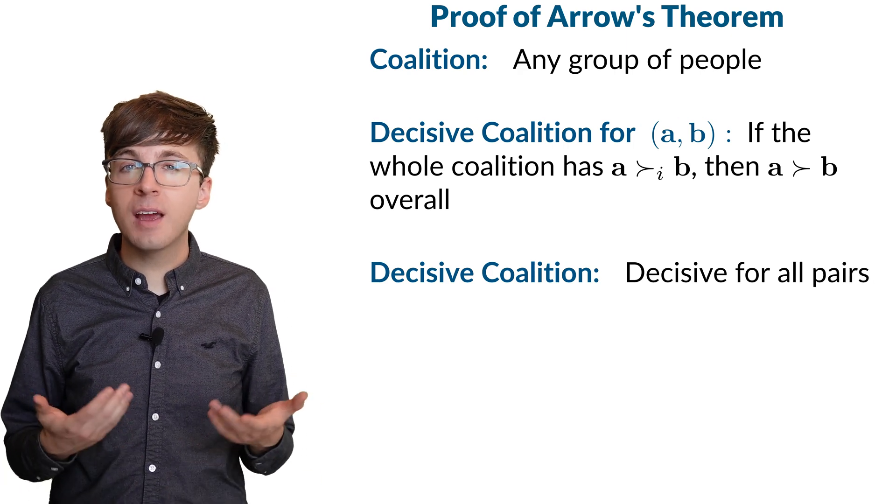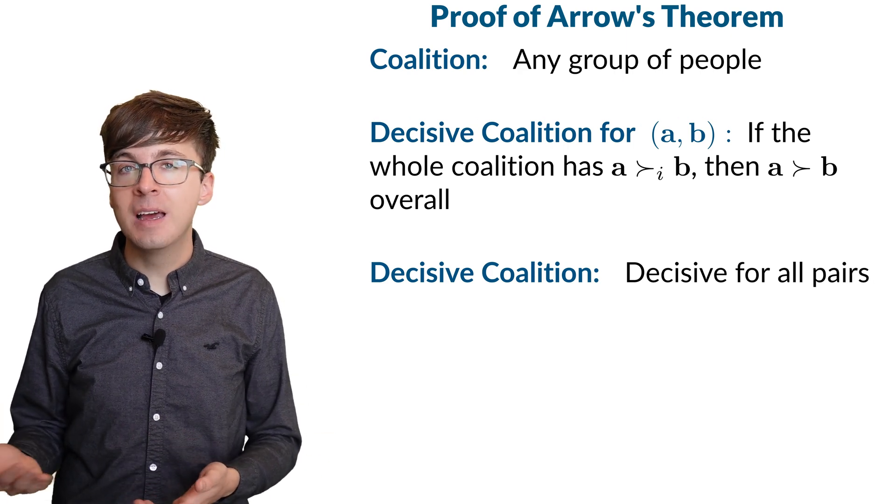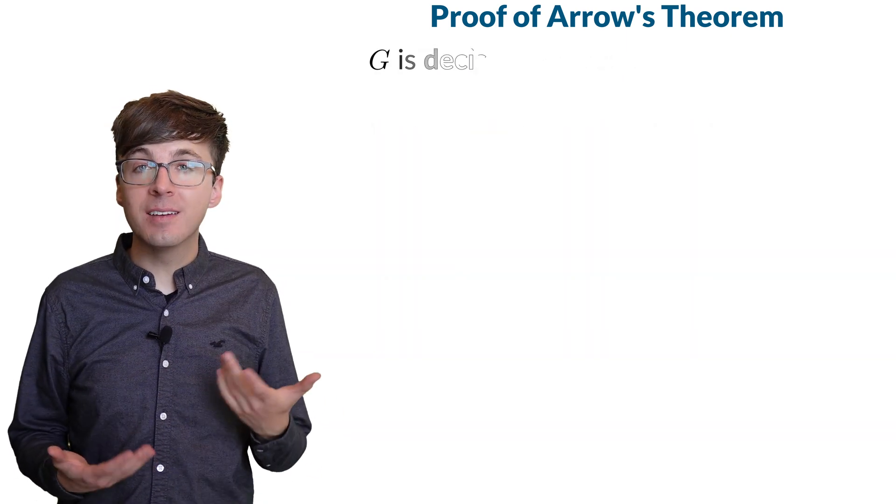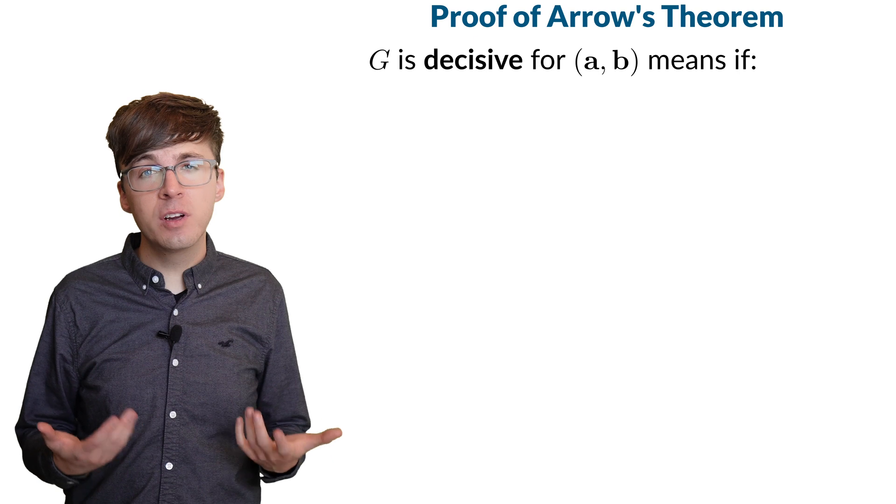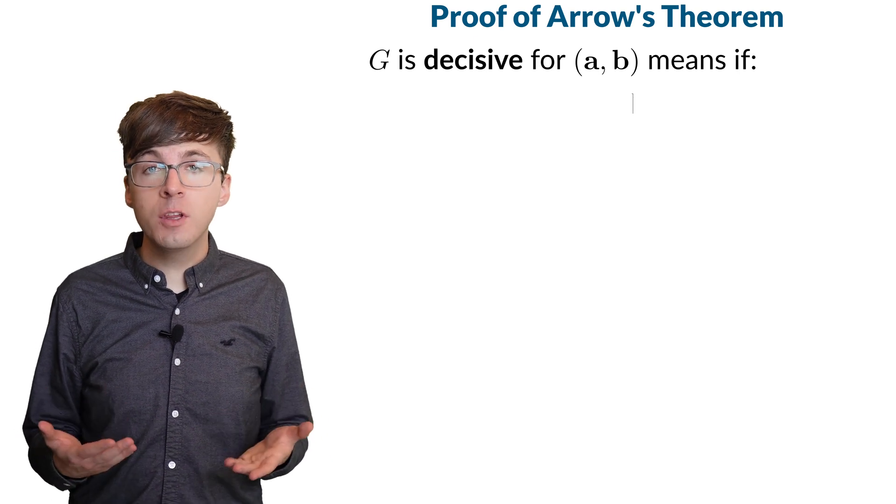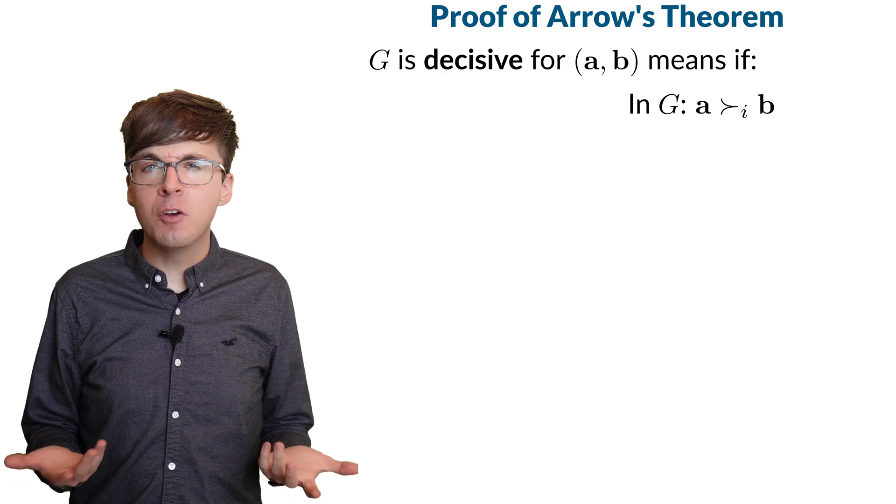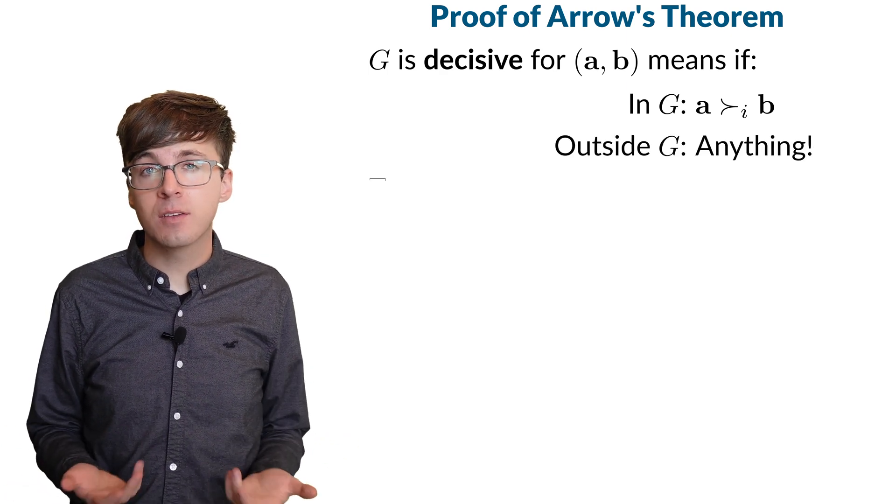Intuitively, this means the coalition has the power to decide the outcome as long as they all vote unanimously. A coalition being decisive for AB is a pretty strong condition. If the coalition ranks A above B, then A will beat B, no matter how everyone else ranks the alternatives.